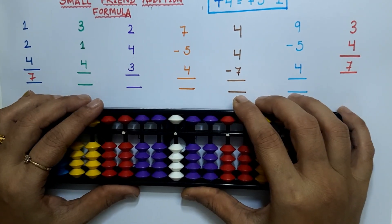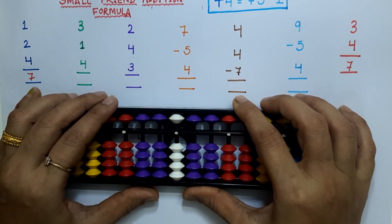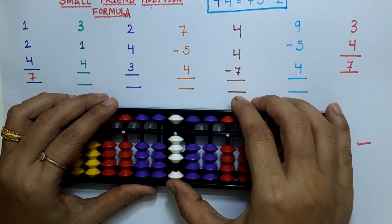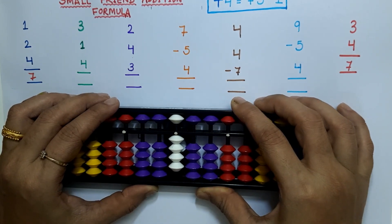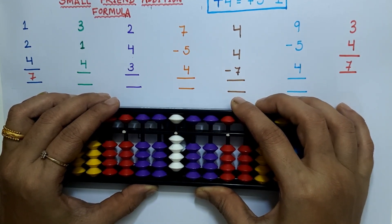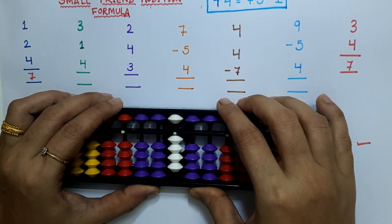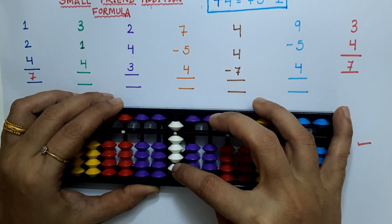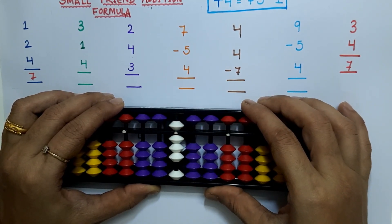Next example is 3 plus 1 plus 4. We don't have 4 bits available here to add, so we apply the formula: plus 4 equals plus 5 minus 1. The answer is 8.